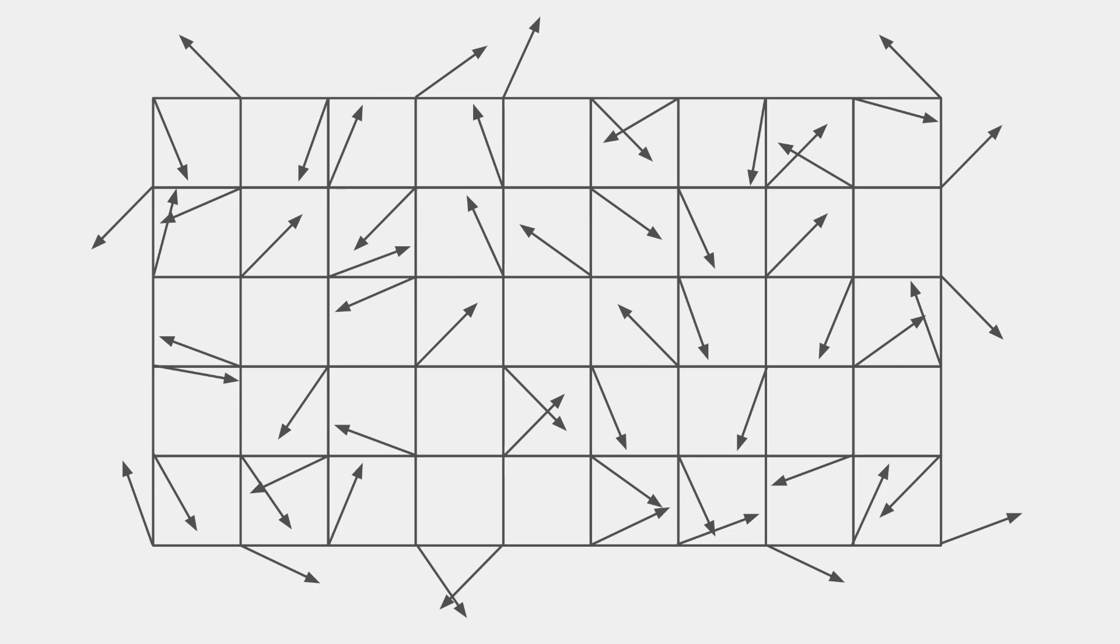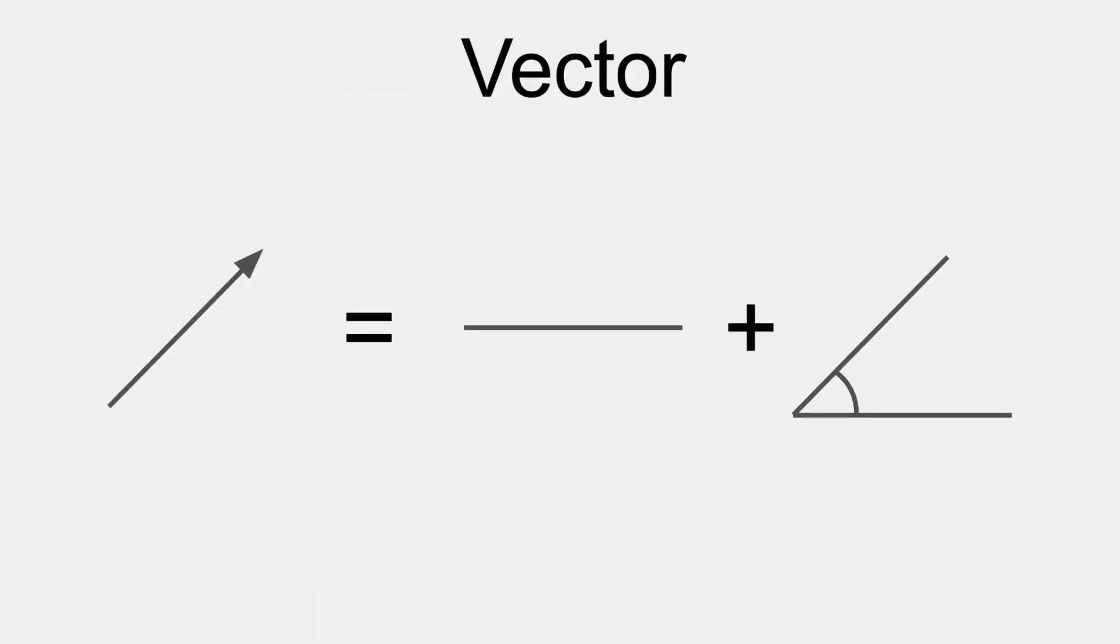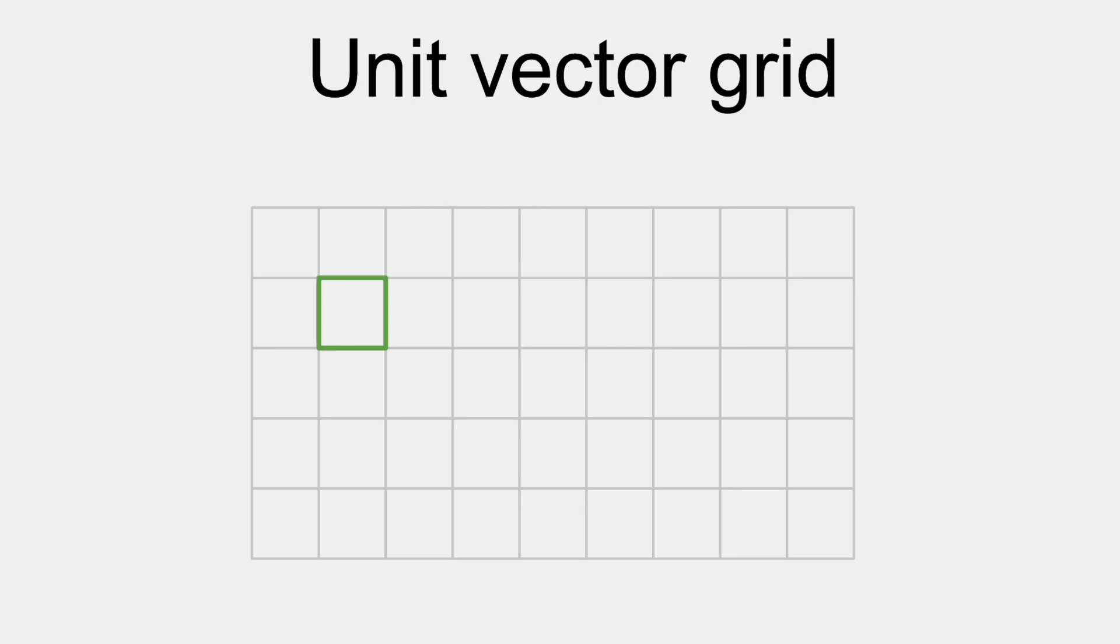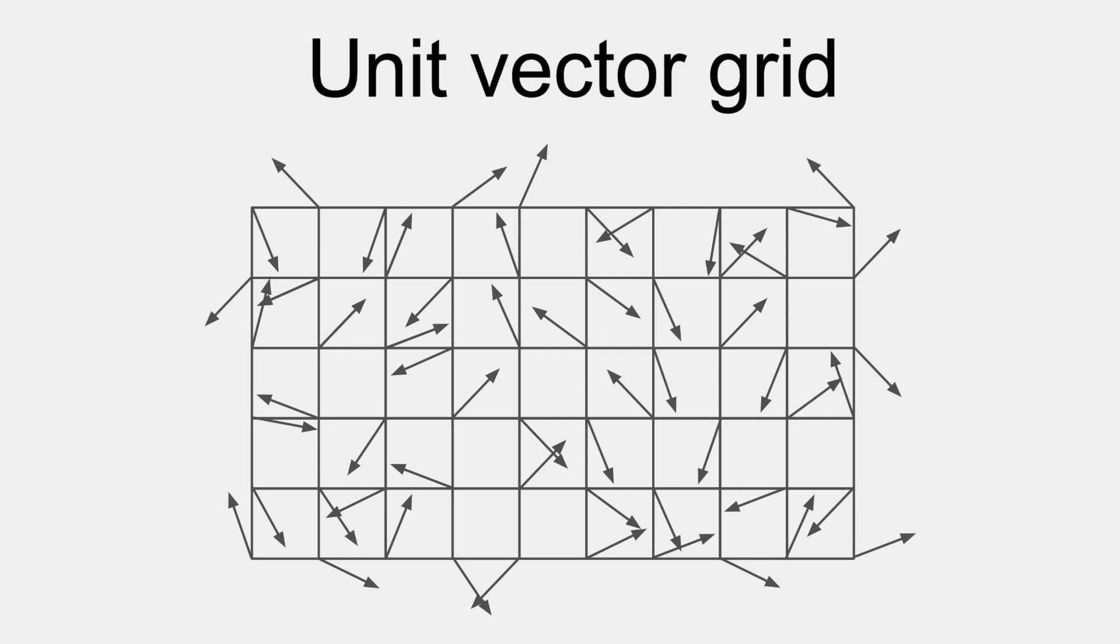What do I mean by this? If you don't know what a vector is, just think of it as a line segment with a direction. A unit vector is a vector that has a magnitude, or length, of 1. A grid of these vectors simply refers to a grid with a unit vector at each grid intersection. These vectors are called gradient vectors.